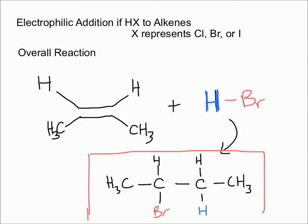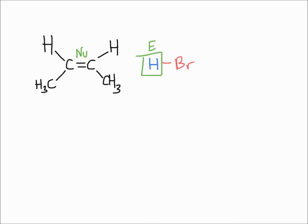Now let's take a look at the mechanism of how this happens. Here I've drawn that the nucleophile is this alkene—the double bond—and the electrophile is this hydrogen. What's going to happen is this nucleophile attacks the electrophile, and the electrons from the hydrogen go onto the bromine.